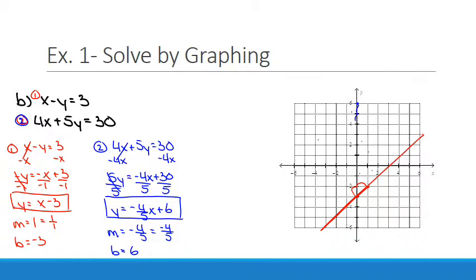So I'm going to go down 4. 1, 2, 3, 4. Over 5. 1, 2, 3, 4, 5. Right there. And you can see that's my point of intersection, my point of intersection already.